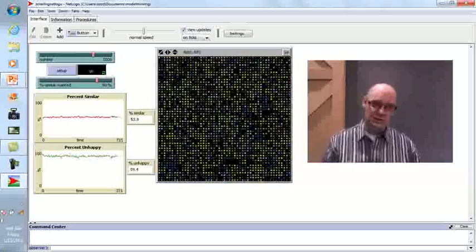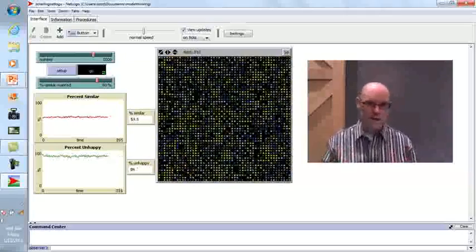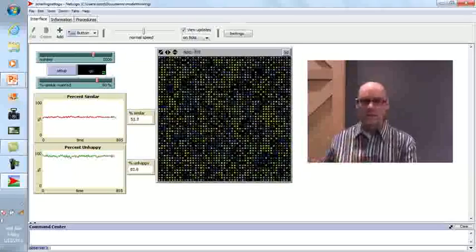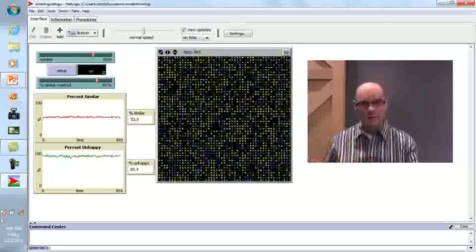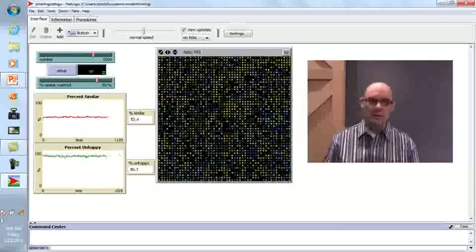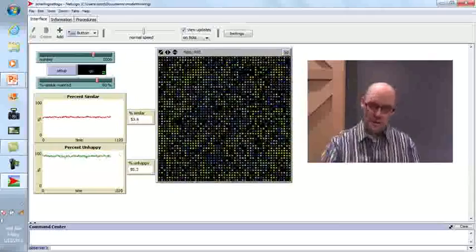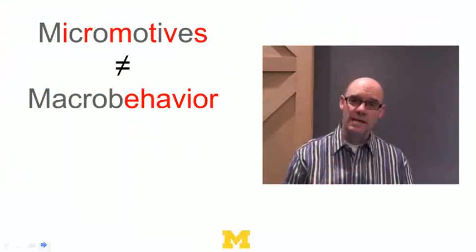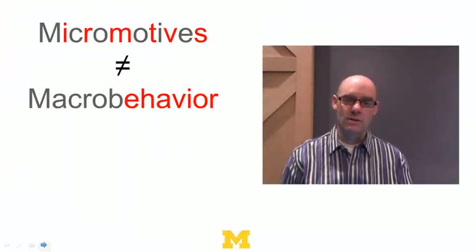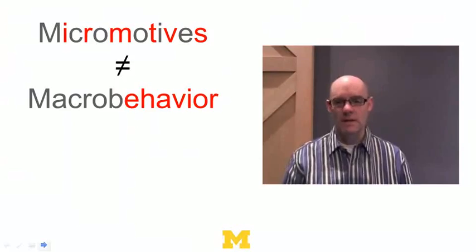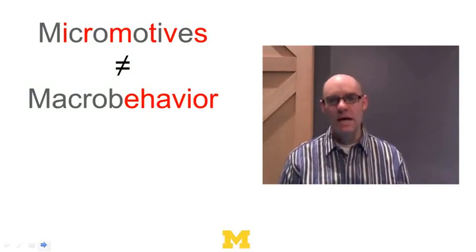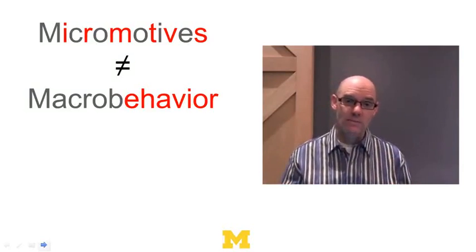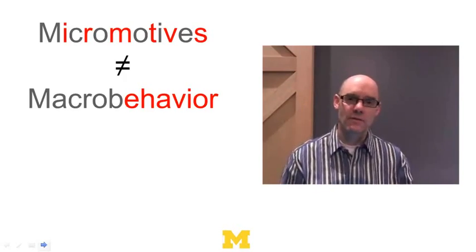What Schelling's model tells us, in this simple way, is that what happens at the macro level — segregation by race, by income, by all sorts of things — may not be because at the micro level people are that intolerant. The micro and the macro may not align. That's the big lesson: micromotives need not equal macro behavior. In fact, Schelling has a book called 'Micromotives and Macro Behavior,' reminding us that macro level outcomes need not imply what we think about the micro level behaviors of individuals.